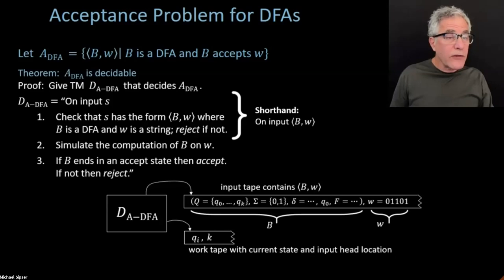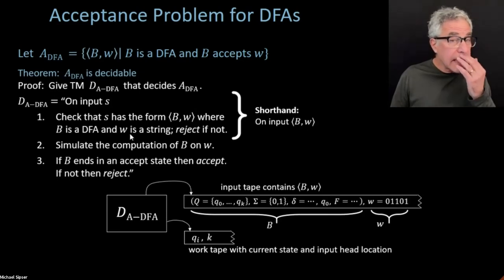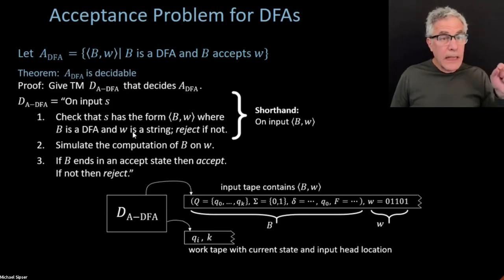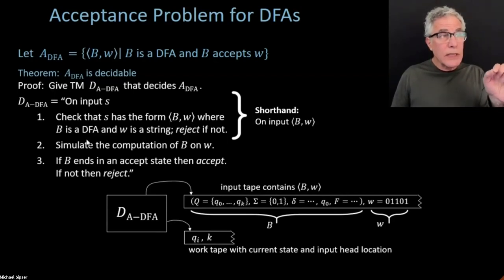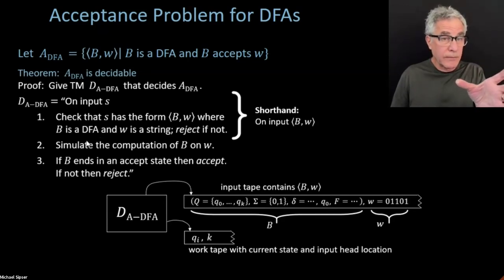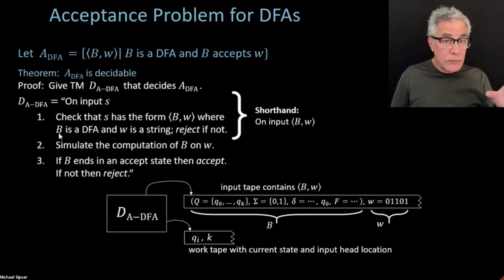A good question: what if B gets into a loop on W? Well, that's not going to happen. B is a DFA. DFAs move from state to state every time they read a symbol of W. When they get to the end of W, it's the end of the story — there's no more computation. So we know in exactly how many steps B is ever going to take: the same number as the length of the input.